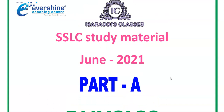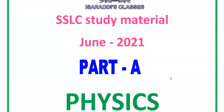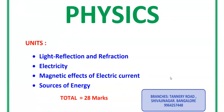Before I start this class, I am very thankful for the classes that have prepared this study material — that is the IC classes. As you can see here, in this we are going to cover the topics Light, Reflection and Refraction, Electricity, Magnetic Effect of Electric Current, and Sources of Energy. The total marks covered for your final board exam from the Physics part is 28 marks.